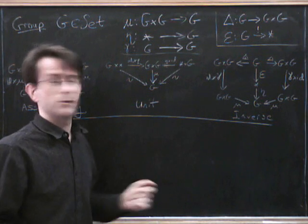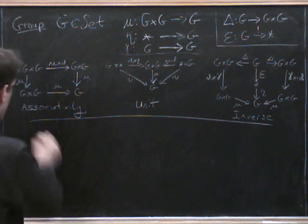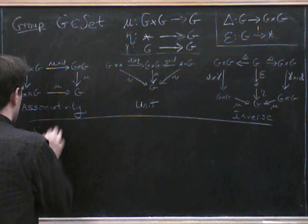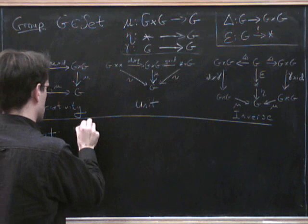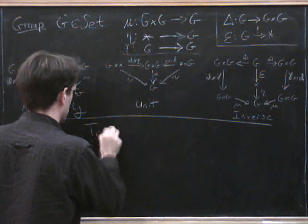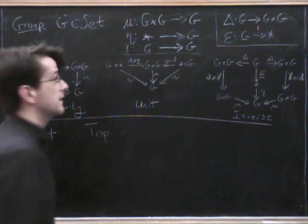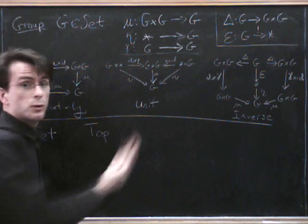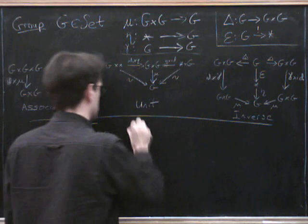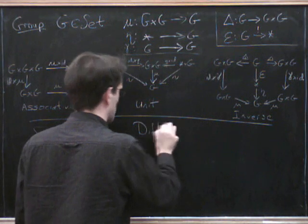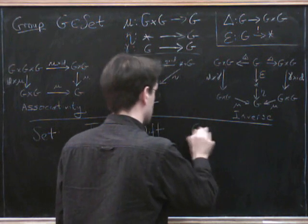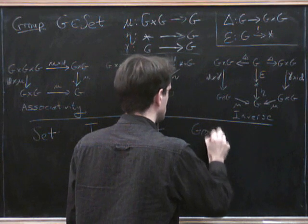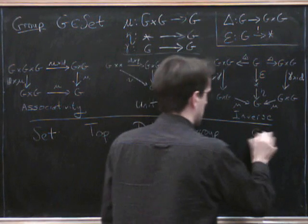Okay, so which ones can you think of? So I can think of the one I've written down there, which is the category of sets. I can think of Top, the category of topological spaces. So the product is just the usual cartesian products of spaces. I can think of smooth manifolds. What's another one? Oh, the category of groups, and the category of categories.